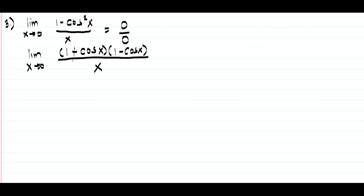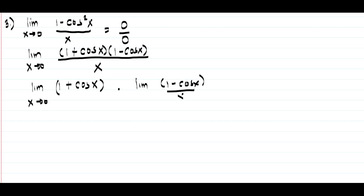Multiplying (1 plus cosine x)(1 minus cosine x) gives 1 minus cosine squared x. So we separate this into the limit of (1 plus cosine x) as x approaches 0, multiplied by the limit of (1 minus cosine x) over x as x approaches 0. Always remember that the limit of (1 minus cosine x) over x as x approaches 0 equals 0.